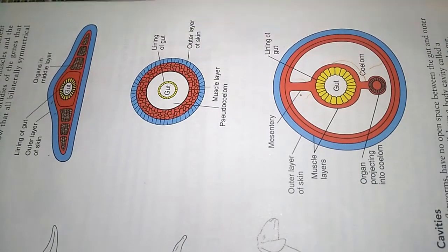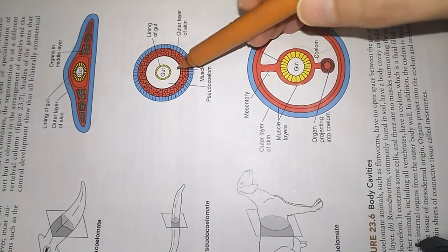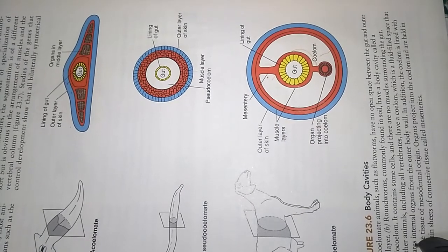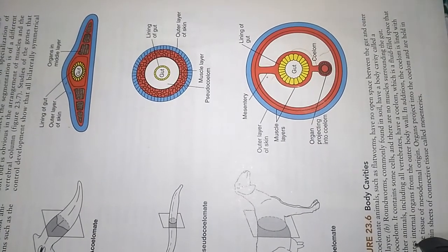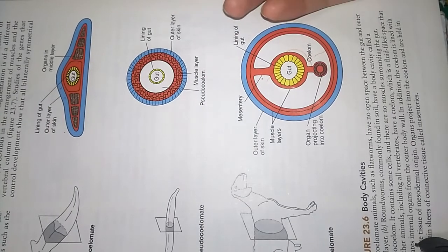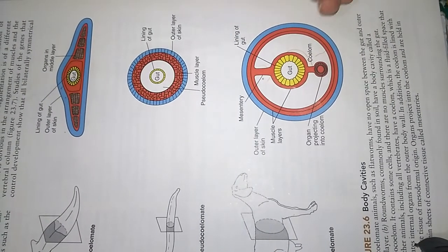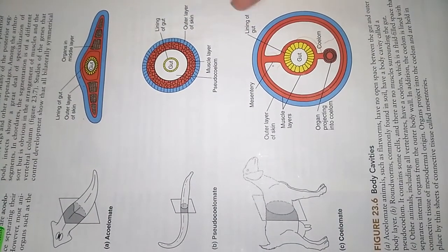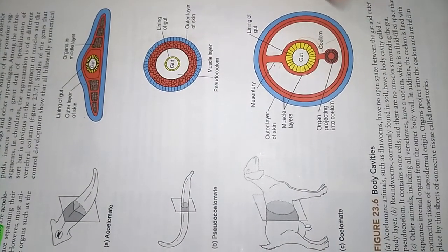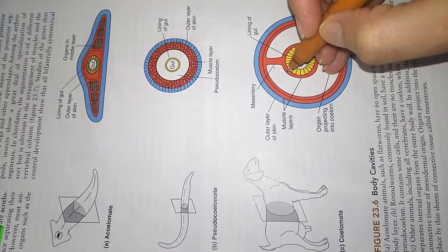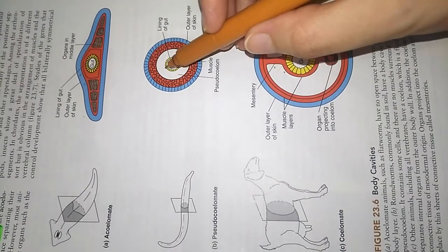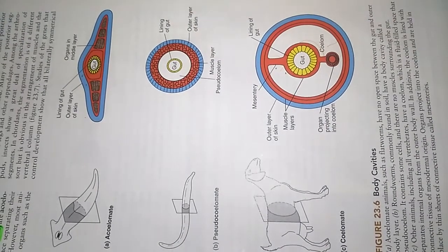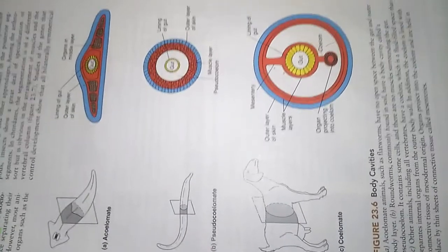Now, what is a pseudocoelom? It differs from the true coelom. The pseudocoelom is located between the lining of the gut and the outer body wall. There are two main differences between pseudocoelom and true coelom. The first difference is that in a pseudocoelom there are no muscles present around the gut, whereas in a true coelom there are muscles present along the lining of the gut.